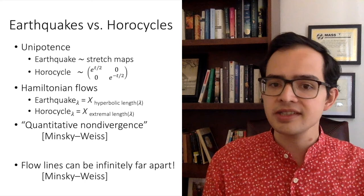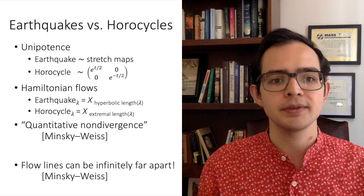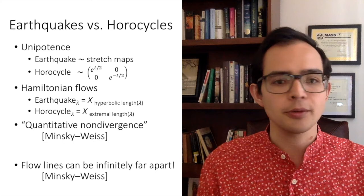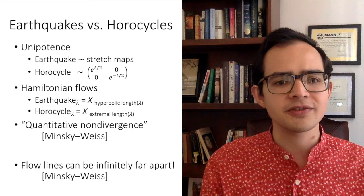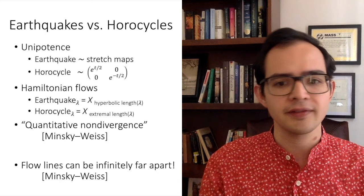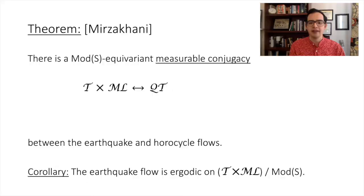The earthquake and horocycle flows have many similarities, usually attributed to the fact that they play the role of unipotent flows associated with the geodesic flows of the Thurston asymmetric Lipschitz metric and the Teichmüller metric respectively. Concretely, both are generalizations of twist flows, both are Hamiltonian flows of length functions, and both recur to the thick part of Teichmüller space in a quantitative way — this is a theorem of Minsky and Weiss. However, these two flows really do belong to disparate worlds — hyperbolic versus flat geometry — and Minsky and Weiss showed their flow lines can be infinitely far apart. All the same, in 2008, Mirzakhani proved that these two flows are equivariantly measurably conjugate, and used this to prove that the earthquake flow is ergodic on the corresponding moduli space — the quotient of Teichmüller space times measured laminations by the mapping class group.